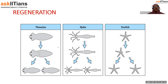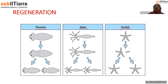Examples include the flatworm planaria: if the body accidentally divides into two, each part is capable of developing into an adult. The same can happen with hydra. With a starfish, only the arm — provided it includes part of the central disc — is capable of regenerating, not just any part of the body.